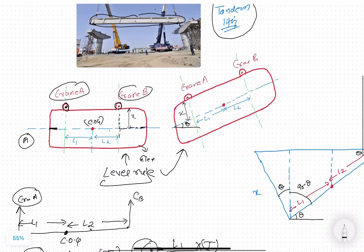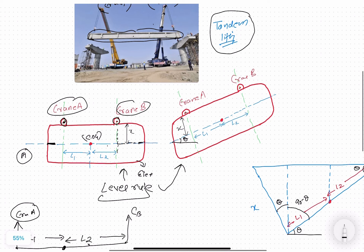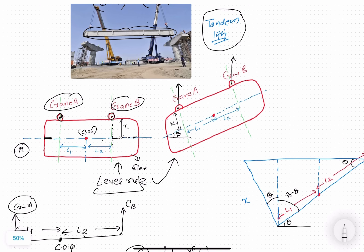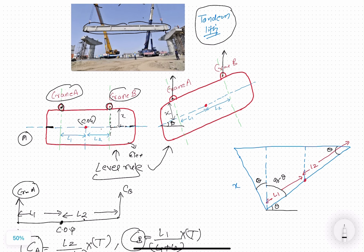Now there is another case where the element is at an angle theta. X is the same distance, but the element is tilted at angle theta. Crane B is lifting from one side and crane A from the other. There is some tilt, and in such a case we have to analyze the load coming on each crane.